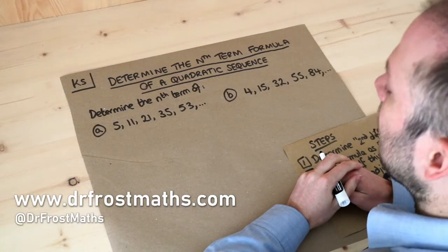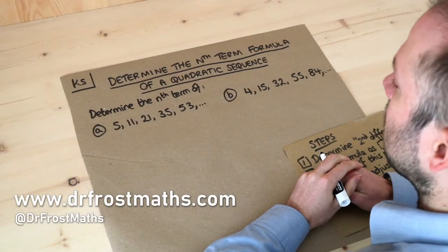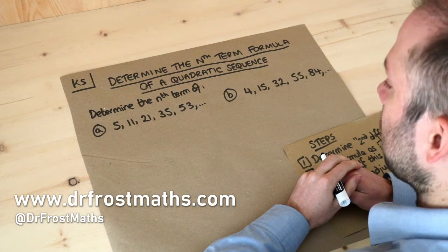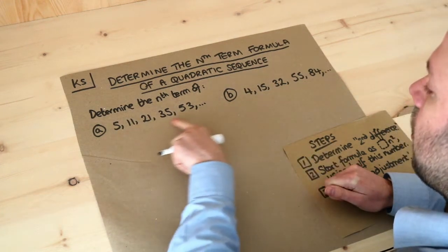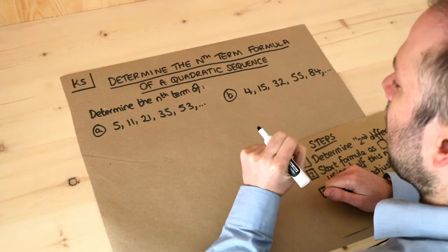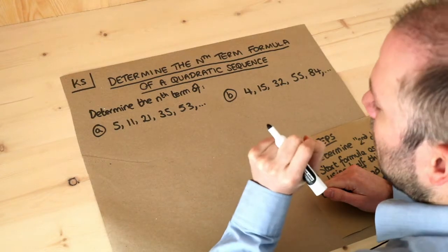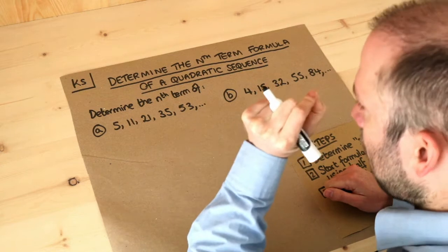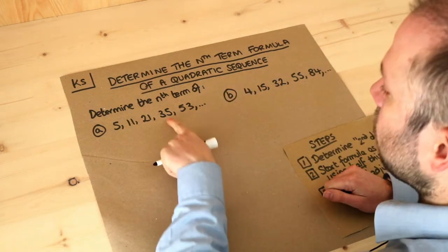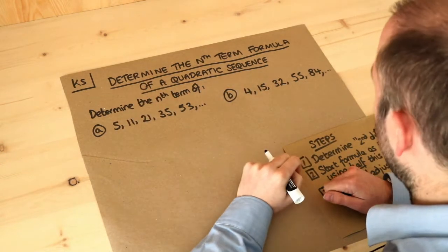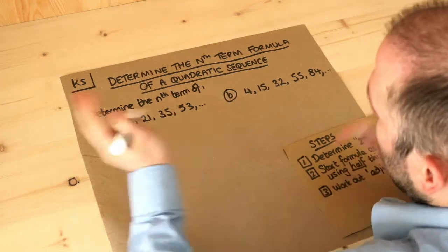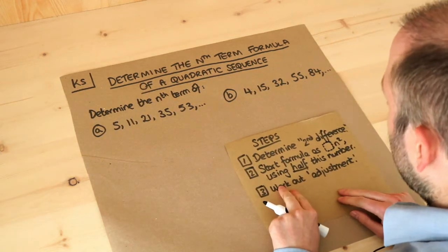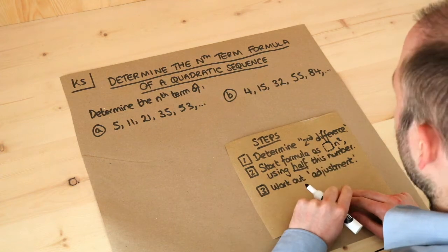Hello and welcome to this Dr. Ross Mass key skill video on determining the nth term formula of a quadratic sequence. We want to find the nth term formula, meaning that given a particular position in the sequence — say the fourth term — I can plug four into my formula to get 35, or I could work out the hundredth term. The steps are: first, determine the second difference.